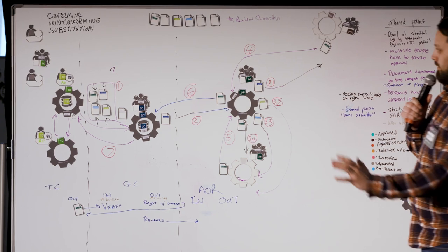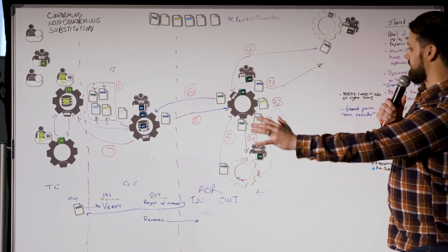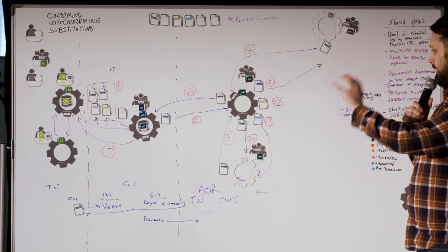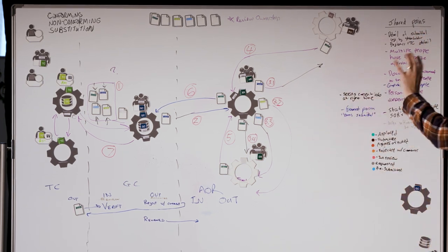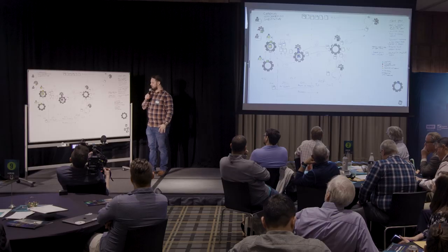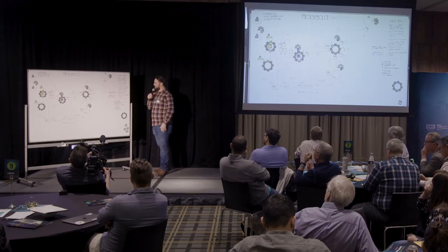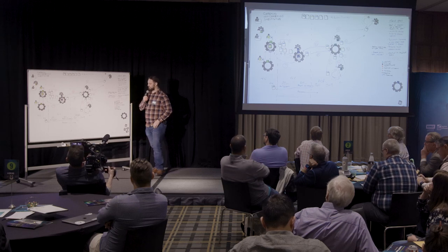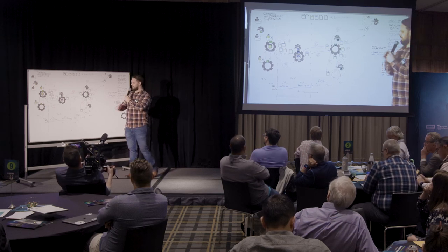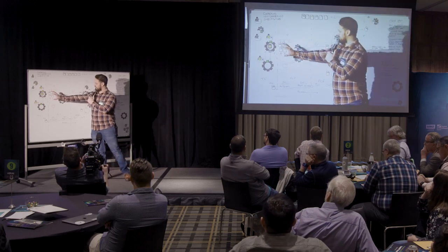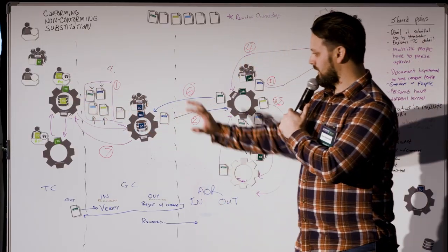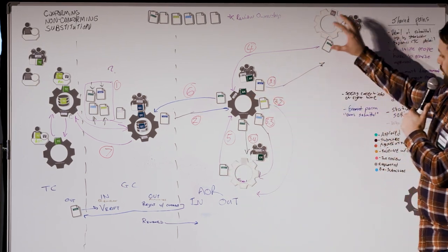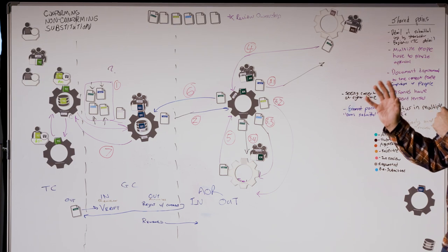We have a trade contractor submitting a submittal for a specification section requested by a general contractor to build something for an owner. We found a lot of shared pains and a lot of statuses to go through, but in the end you have a lot of different lenses — a trade contractor lens, a general contractor lens, an architect of record lens, and an owner lens — and they all look at it a little bit differently.